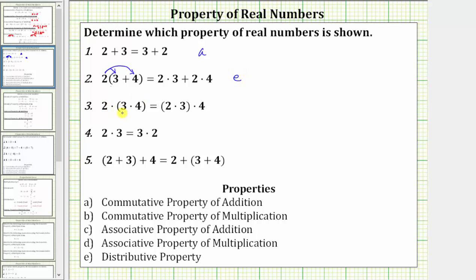For number three, we have two times the quantity three times four equals the quantity two times three times four. Here, we are changing the grouping of a product, which is the associative property of multiplication, which is d. Next, two times three equals three times two — here we are changing the order of a product, which is the commutative property of multiplication, which is b. Finally, the quantity two plus three plus four equals two plus the quantity three plus four. Here, we are changing the grouping of a sum, which is the associative property of addition, which is c.